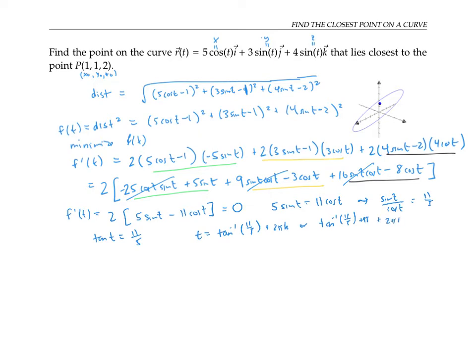But in the end, I'm not actually interested in the value of t itself, like the time I would get to the point that's closest. I want the actual point that's closest. So I actually want the x, y and z values, which means I'm interested in finding the values of five cosine t, three sine t, and four sine t. I can actually find candidates for sine t and cosine t by looking at a triangle without actually going through the value of t itself.